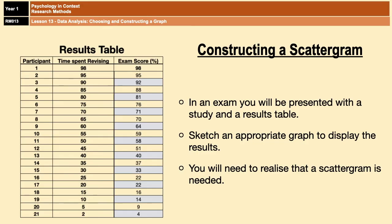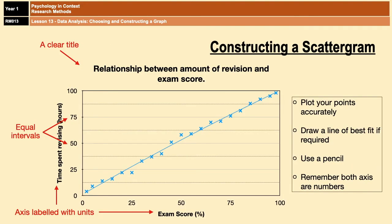There are certain things to be aware of when drawing scattergrams, and they're fairly similar to a bar chart. Make sure your chart has a clear title. Make sure your axes are labelled with units, and that the unit intervals are equal. When plotting your points, make sure you plot them accurately and use a pencil. Remember that both axes are numbers, and only draw a line of best fit if you're required to do so.